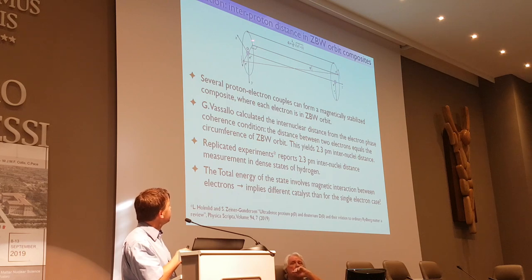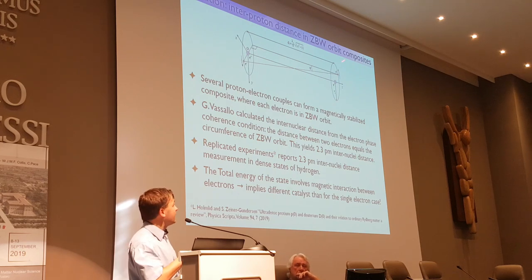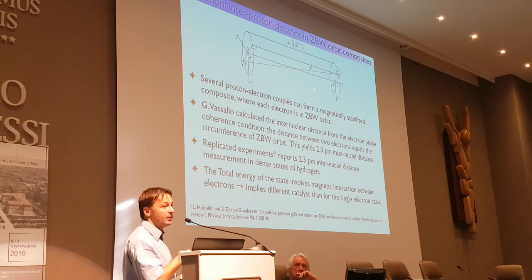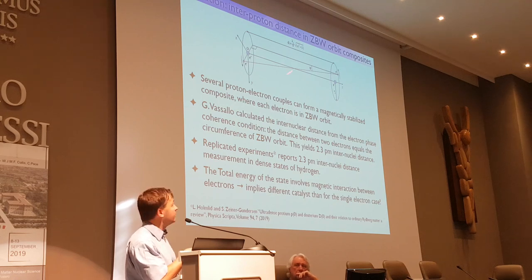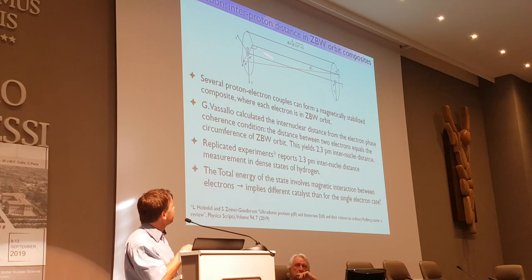I have to skip over this slide quickly. This is the Holmlid ultradense hydrogen. It turns out that the nucleus-nucleus distance they measured — 2.3 picometers — corresponds to our model. The Holmlid ultradense hydrogen is actually the same Zitterbewegung wave function orbit, but with magnetic interaction between the nuclei.